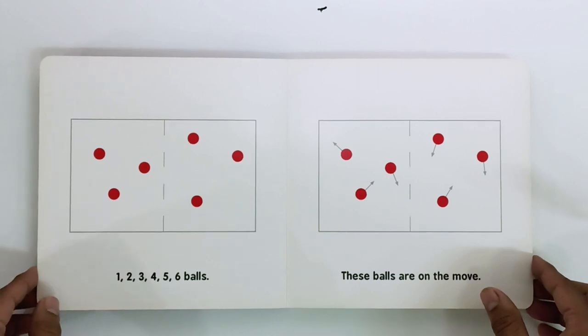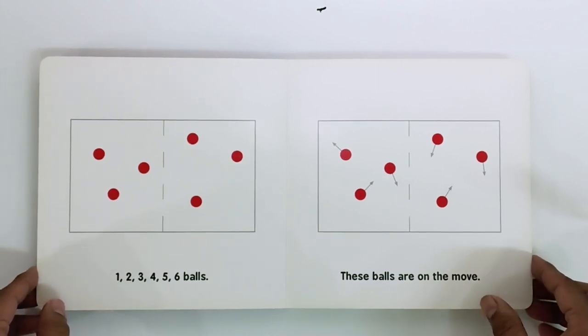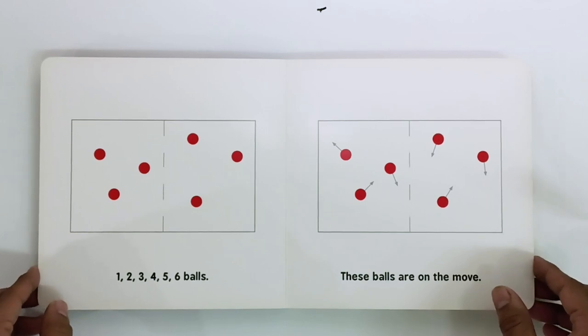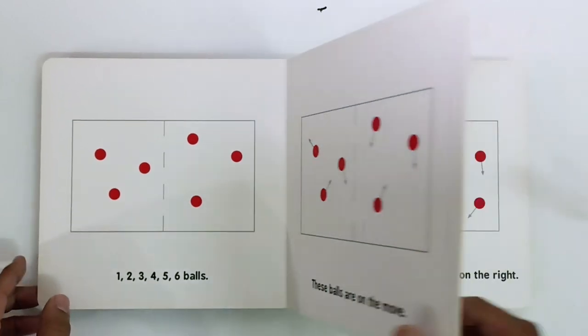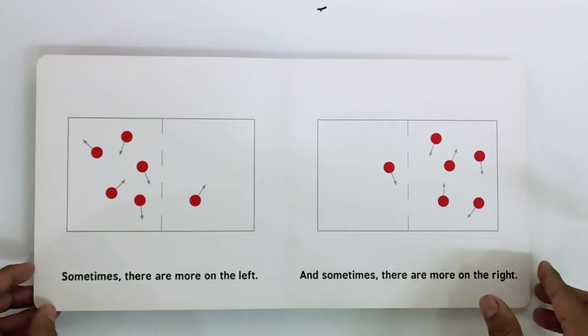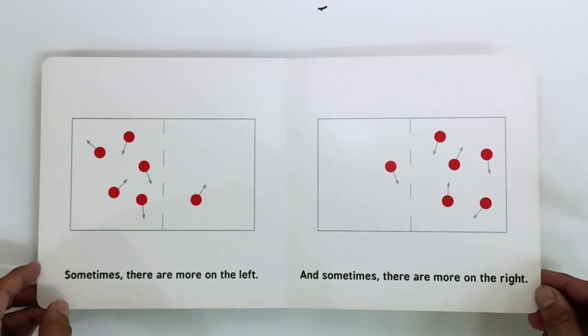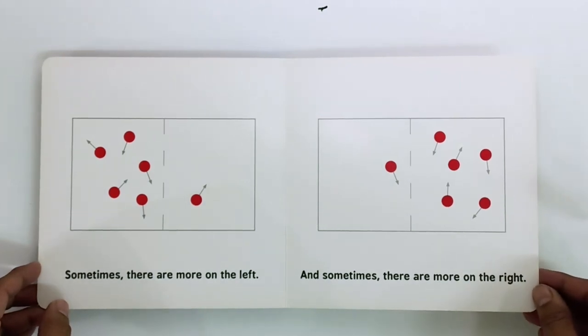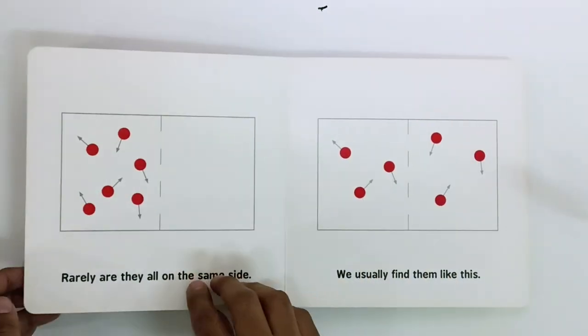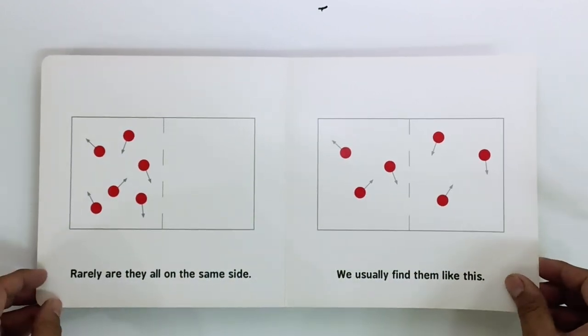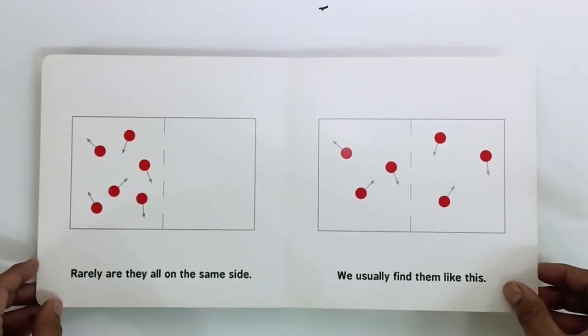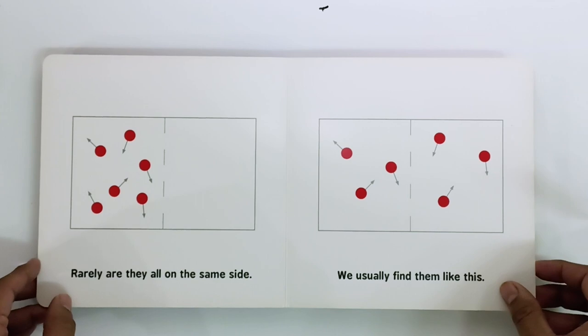One, two, three, four, five, six balls. These balls are on the move. Sometimes there are more on the left, sometimes there are more on the right. Rarely are they all on the same side. We usually find them like this.